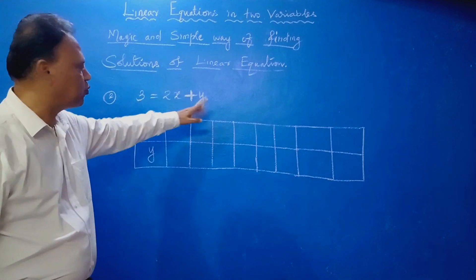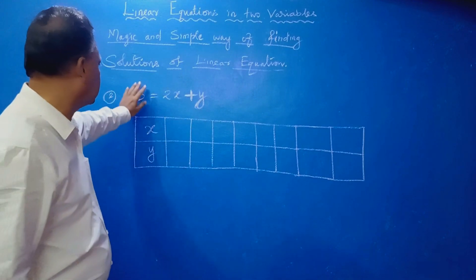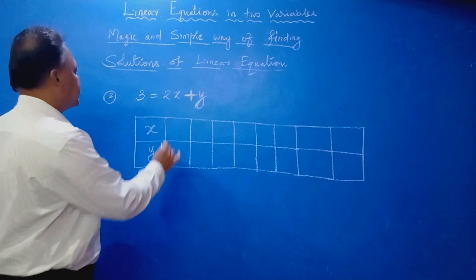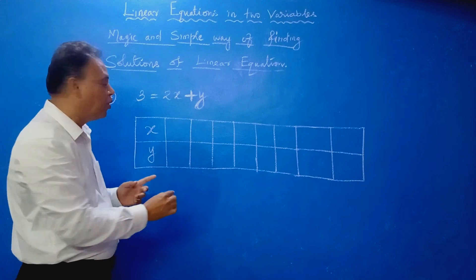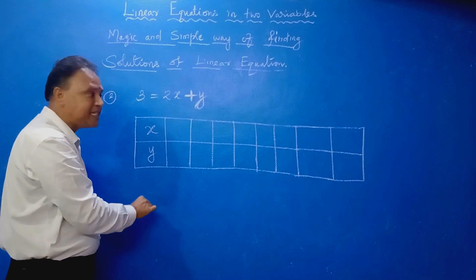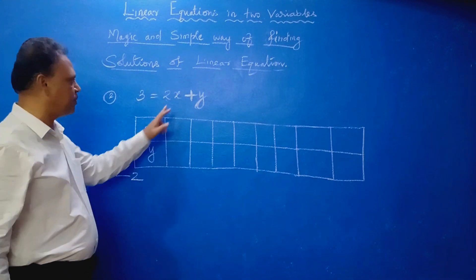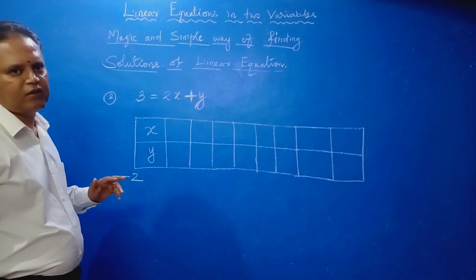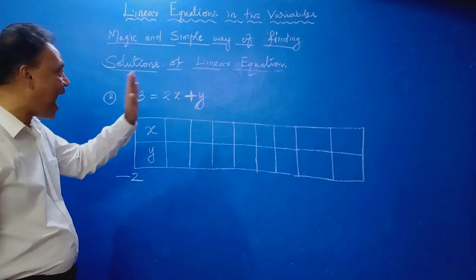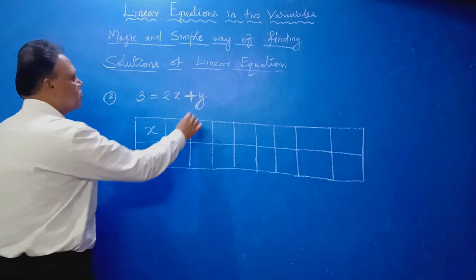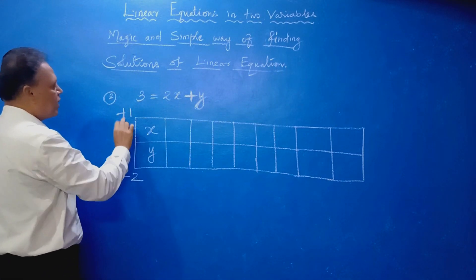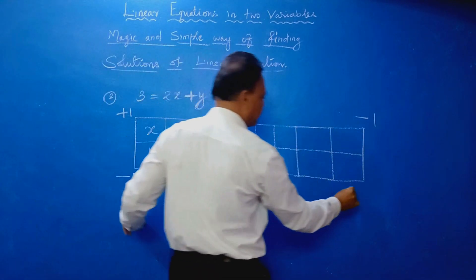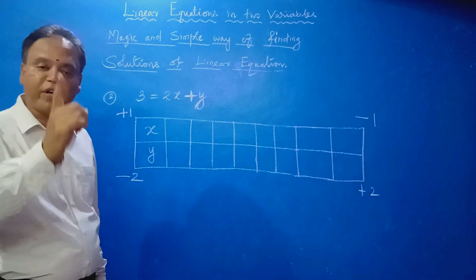See this equation: 3 equal to 2x plus y. You don't need to bother about the constant term. Only what we need is the x-coefficient and y-coefficient. X-coefficient is 2, write it below y — while writing below y, change the sign: plus 2 means minus 2. Y-coefficient is plus 1 — write it above x as it is, no change. Then bring the sign: plus 1 means minus 1, and minus 2 means plus 2. Sign is very important.